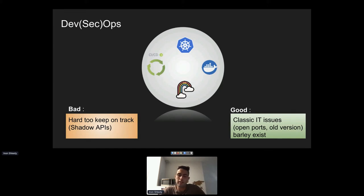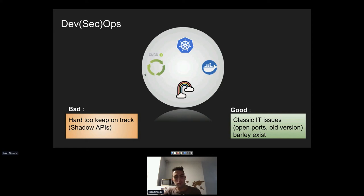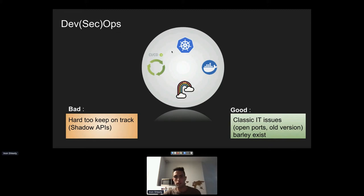On the DevOps side, there's good news and bad news. The good news: classic IT issues like open ports and old versions barely exist today because cloud providers like AWS or GCP handle them. The bad news: DevOps has become too easy — just a few clicks on the AWS console to spin up a new API or environment. This ease makes it much more challenging to keep track of all APIs and microservices, leading to shadow APIs that nobody knows why they're there.